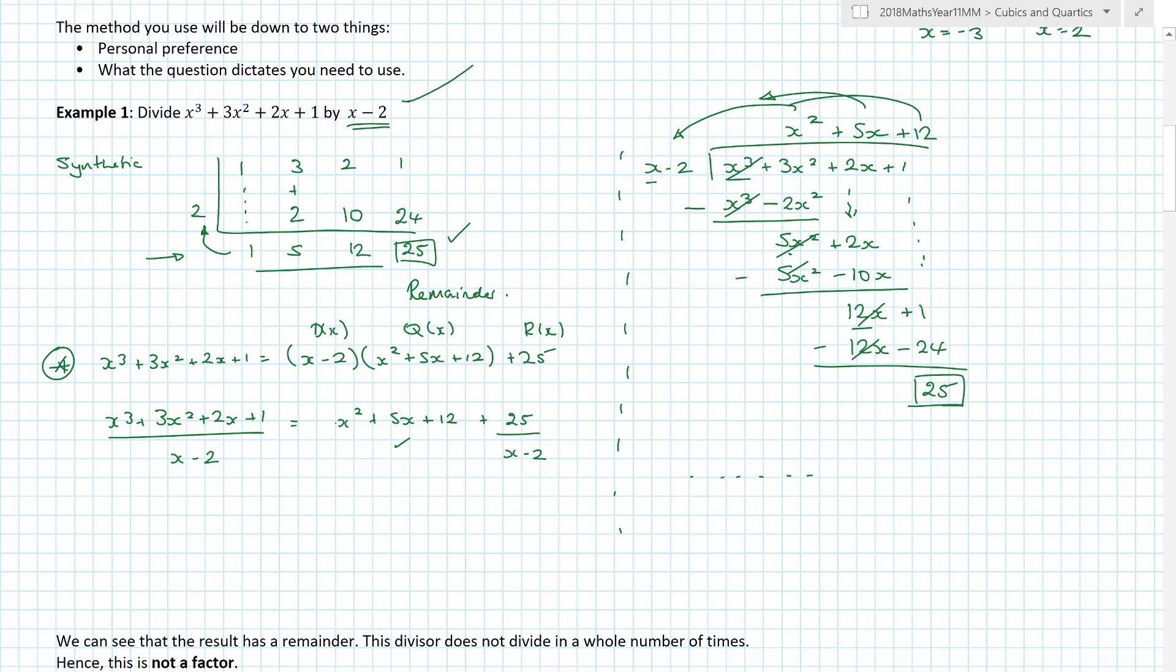But a word of warning: synthetic division only works beautifully when the coefficient of x is 1. You can still do it for 2x minus 5, for example, but you have to do another stage. Once you get the coefficients, you have to do a different stage. But I have not yet understood a way to do something like x squared minus 1. If ever you have to divide by x squared minus 1, I don't know how to make synthetic division do that. Maybe you do. Awesome if you do, but it's beyond the scope of this video.